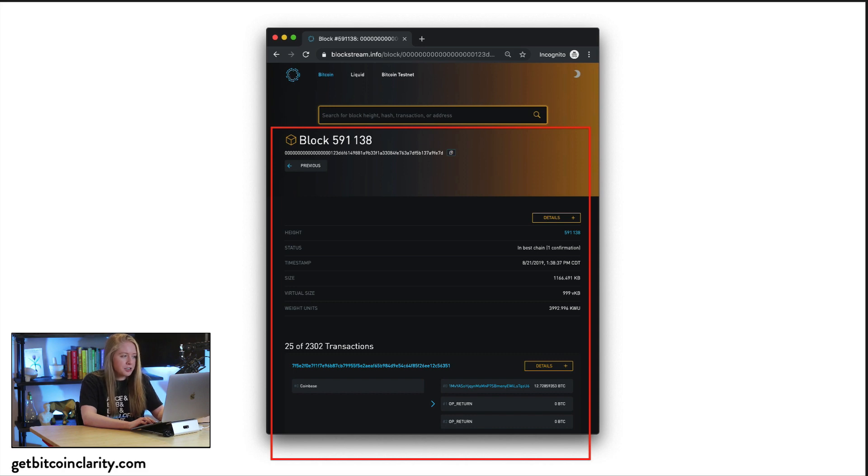Now we understand what blocks are. We know that blocks are containers for transactions. We know that blocks are these entities that are confirming transactions by miners. We have a list of transactions in this block - looks like there's over 2,000 here. And then inside each transaction, our list of UTXOs, and the function of UTXOs is to block value on the blockchain.